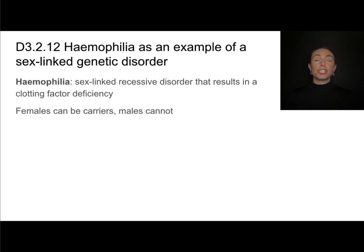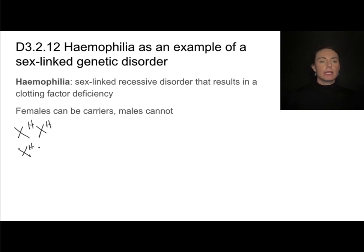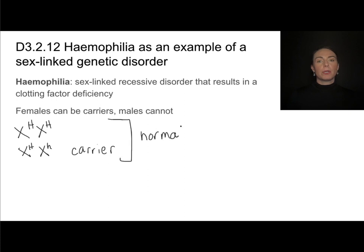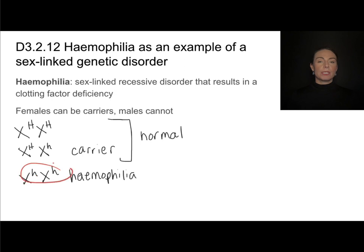There are a few different genotypes that are possible. Females can have two copies of the dominant allele, in which case they have normal blood clotting. They can be heterozygous — one copy of the recessive allele — and this makes them a carrier. A carrier is an individual that has the recessive allele but does not have the symptoms of the disease because it is masked by the dominant allele. Only females that are homozygous recessive have hemophilia; they must inherit two recessive alleles.